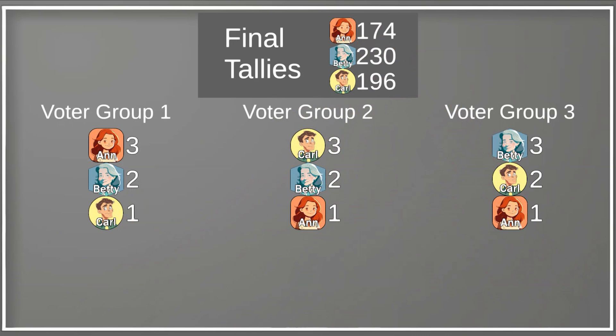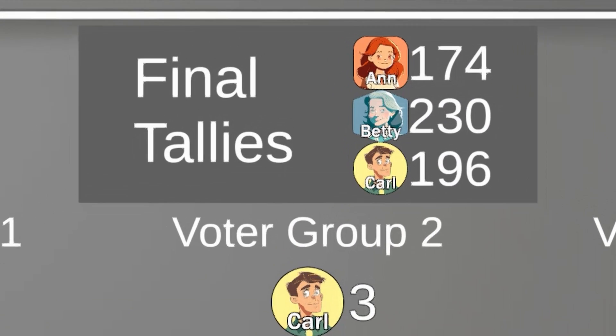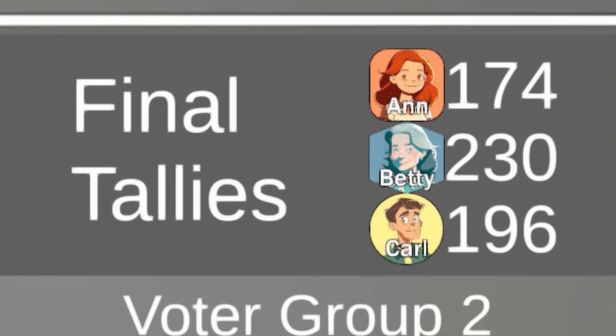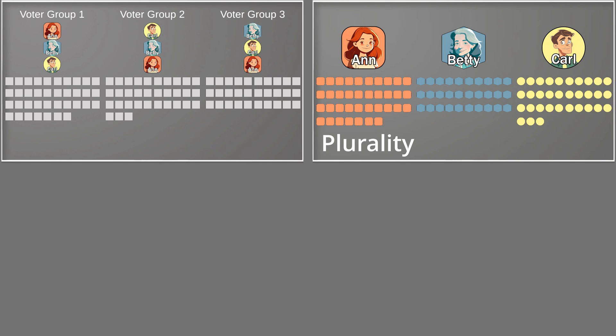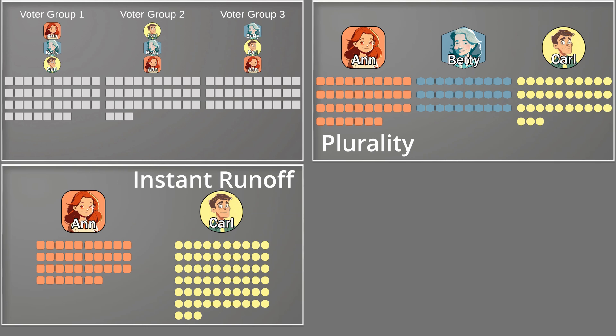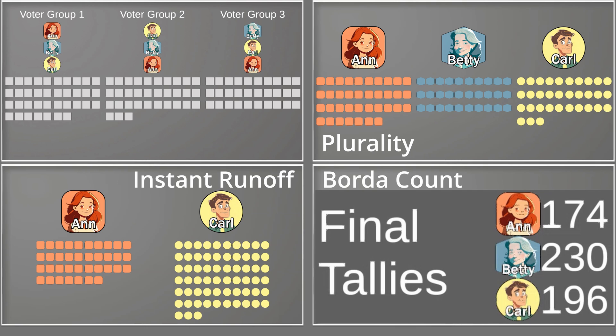We add all these new values to the running total, and we have our result: Betty is the winner with 230 points following our Borda count vote. The advantage of Borda count is that it best captures compromise candidates, in which everybody's second choice might actually be the best candidate. A disadvantage is that it requires voters to rank all of the candidates, even if they don't know all of the candidates that are running. And there you have it — three different voting rule sets resulting in three different winners. With the same population, Anne wins the plurality vote, Carl wins the instant runoff, and Betty wins the Borda count.